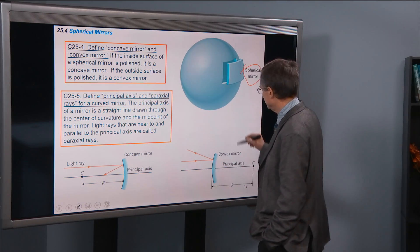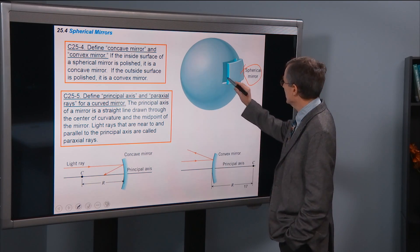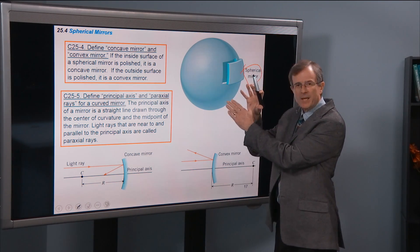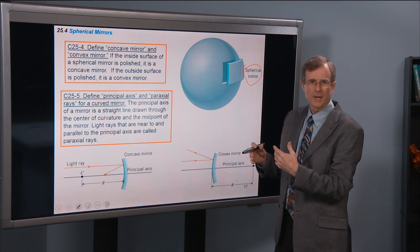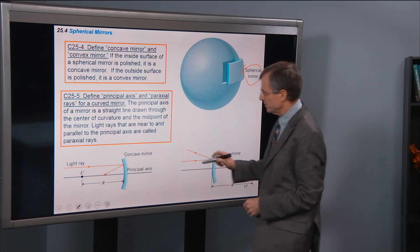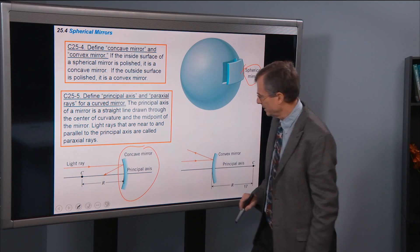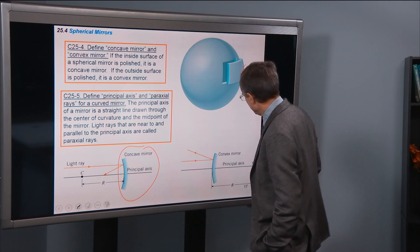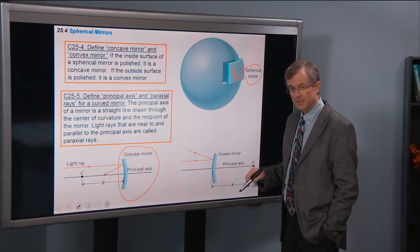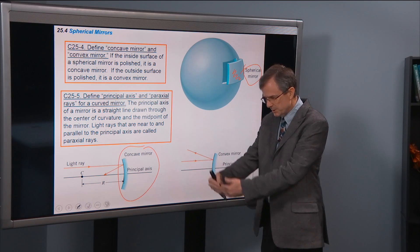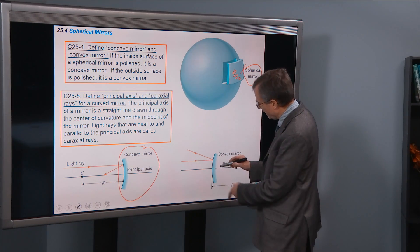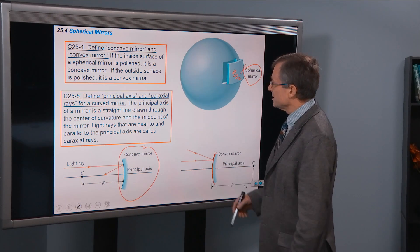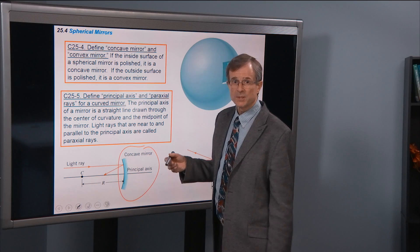A concave mirror is one in which the inside surface is polished — you take this piece out of the sphere and polish the inside surface. Concave means that there's a concavity, kind of like a cave — there's a hollowness to that surface. This is what the concave mirror would look like, where the inside surface is the one used for reflections. A convex mirror is where you polish the outside surface; convex means that there's something bulging out. So if the inside surface is polished it's concave, and if the outside surface is polished it's a convex mirror.